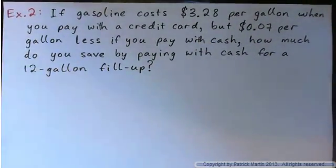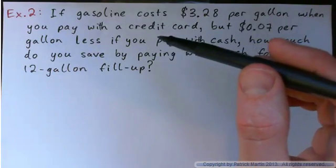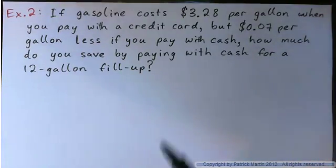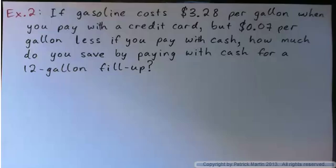Example 2. If gasoline costs $3.28 per gallon when you pay with a credit card, but 7 cents per gallon less if you pay with cash, how much do you save by paying with cash for a 12 gallon fill-up? Go ahead and press pause and work it out. Just press pause, try it yourself and then check the video. Because the idea is that you think hard and you make mistakes, and if you make a mistake then you get to catch it by watching me do the example. Instead of just getting stuck in your homework. So, please think hard on these videos and try and get the examples out on your own.